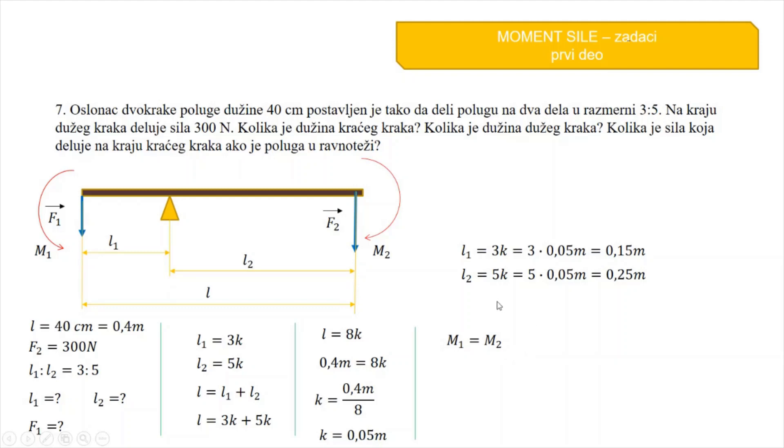Sada mogu pisati uslov ravnoteže. Ova poluga će biti u ravnoteži onda kada je M1 jednako M2. Umesto M1 pišem F1 puta L1, umesto M2 pišem F2 puta L2. Ja sam dobio L1, L2 i F2 imam. F1 se traži koliko je. L1 je s ove strane množilo, kad pređe na drugu stranu delit će. I dobili smo obrazac F1 je jednako F2 puta L2 kroz L1.